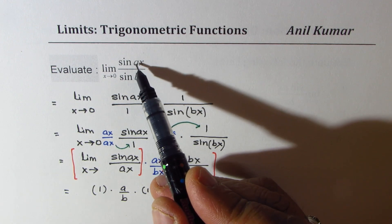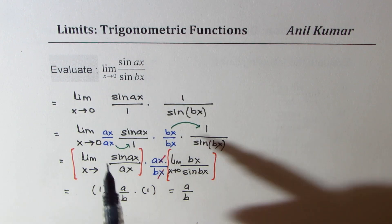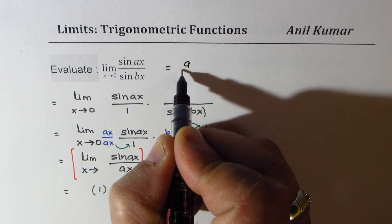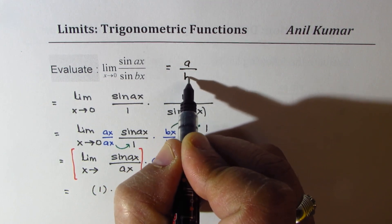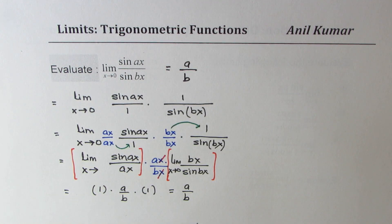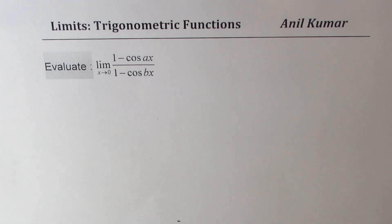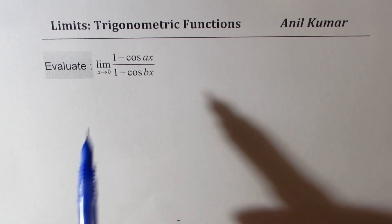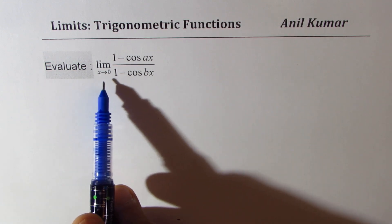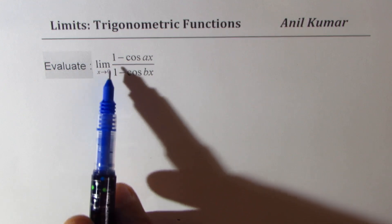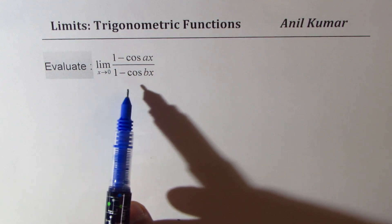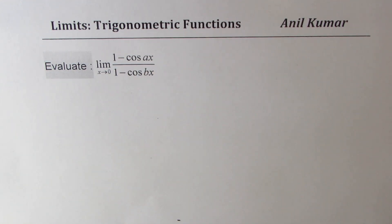Basically it's the same ratio, a over b. It becomes easier to solve these questions for multiple choice questions — if you are given options, it's a straightforward answer. Now let's take the last example. We need to evaluate the limit when x approaches 0 for 1 minus cos ax over 1 minus cos bx.